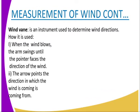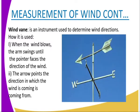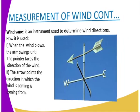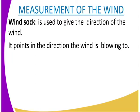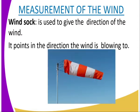We go to the measurement of wind. The first instrument is the wind vane, which is used to determine the direction of the wind. When the wind blows, the arm swings until the pointer faces the direction of the wind — the arrow points the direction from which the wind is coming. The second instrument is the wind sock, which also gives the direction of the wind; it points in the direction the wind is blowing to.